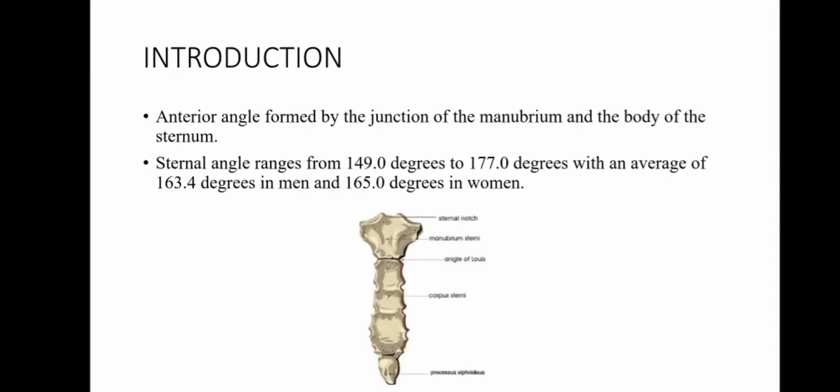The angle of Louis is the anterior angle formed by the junction of the manubrium sterni and the body of the sternum. The sternal angle ranges from 149 to 177 degrees, with an average of 163.4 degrees in males and 165 degrees in females.